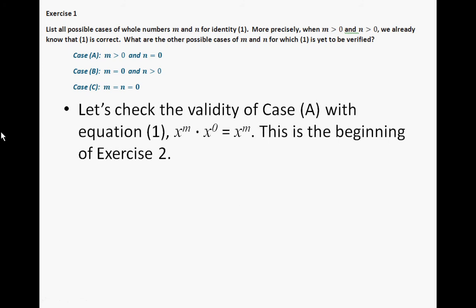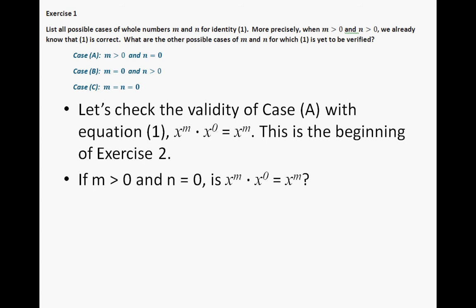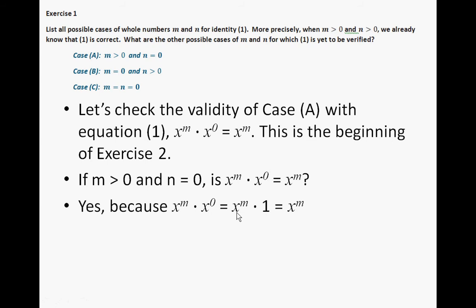Let's check the validity of case A with the first equation: x to the mth power times x to the 0 equals x to the mth power. I'll walk you through the first case, then you will do the second and third cases on your own. If m is greater than 0 and n is equal to 0, is x to the mth power times x to the 0th power equal to x to the mth power? Yes, because replacing x to the 0th power with 1, then 1 times x to the mth power is x to the mth power. That is our proof.